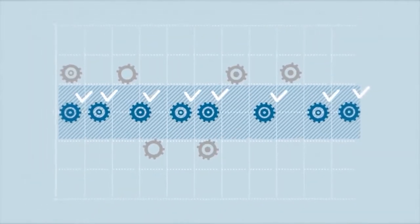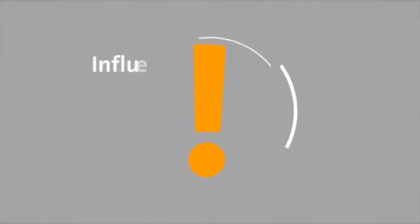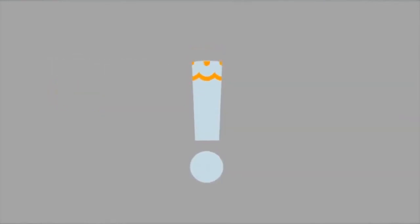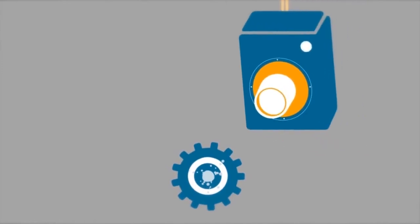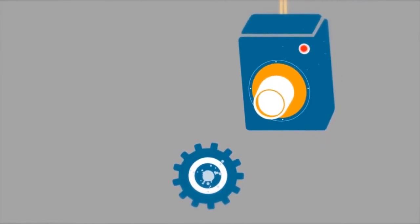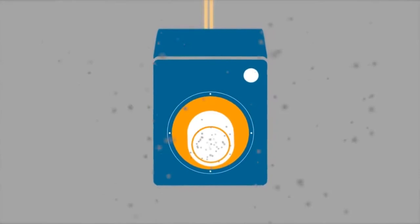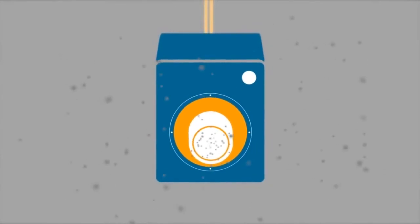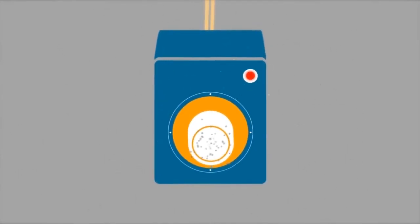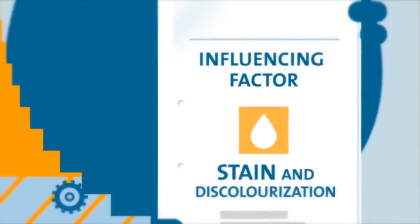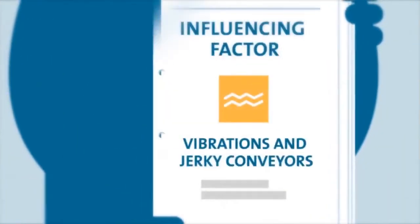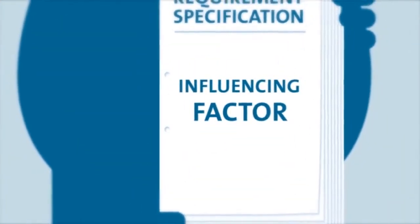Bear in mind that many factors may influence the functioning of the machine vision system. Specify beforehand if a stain or discoloration is relevant or irrelevant, or whether dust or dirt will occur in the manufacturing process. Will there be vibrations or jerky conveyor belt movements?